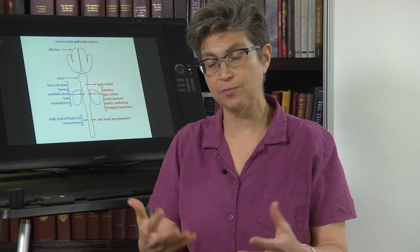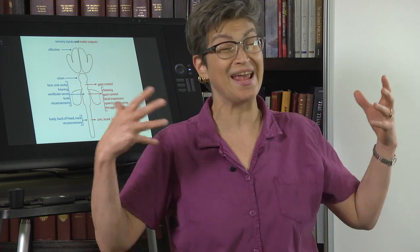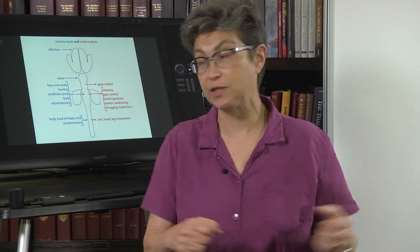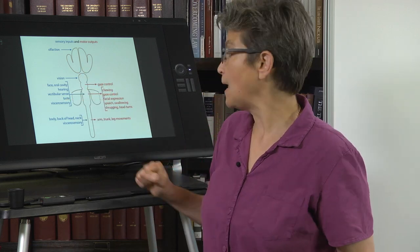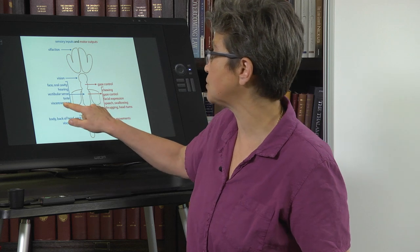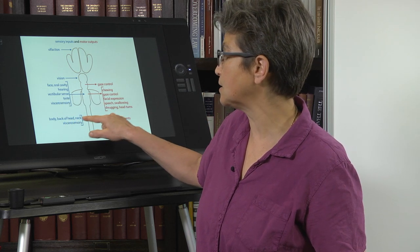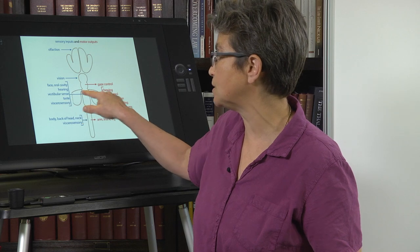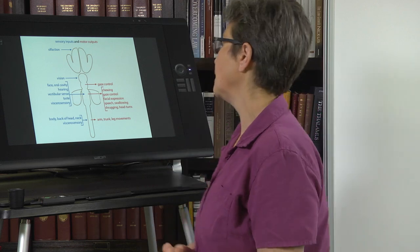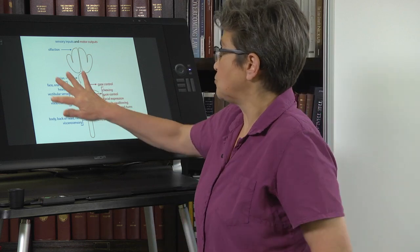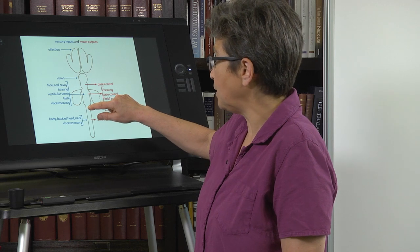Hearing, information about hearing and the vestibular sense — the vestibular sense is where you are in space and how you are moving in space, where your head is in space and how your head is moving in space. Taste comes in here. And there's a lot of viscerosensory information that doesn't go into the spinal cord but goes into the brainstem, coming in through the vagus nerve, one of the cranial nerves. So all of that sensory information is coming into the hindbrain.